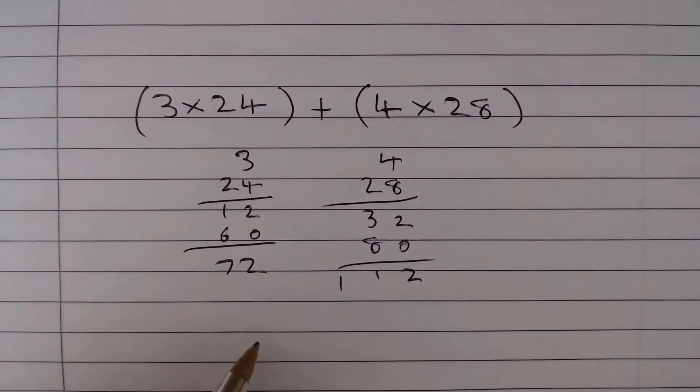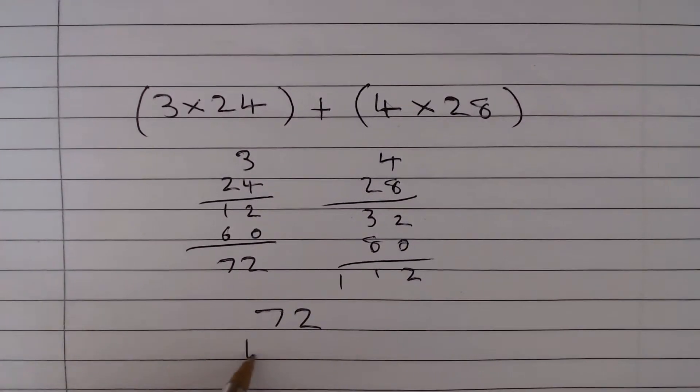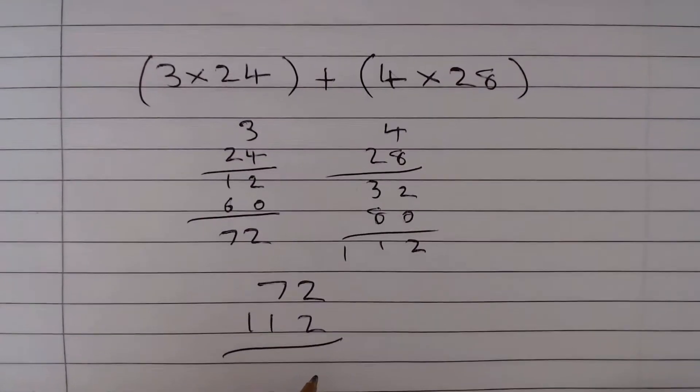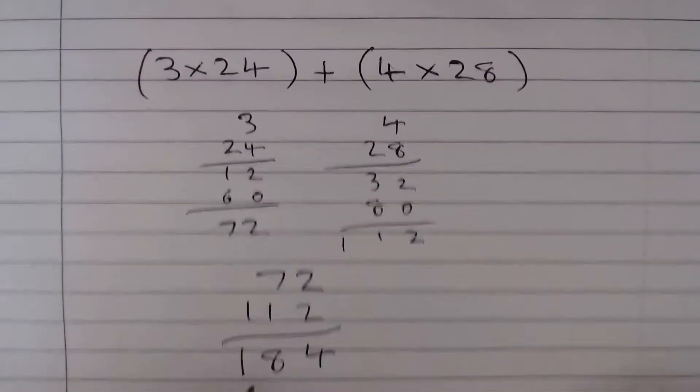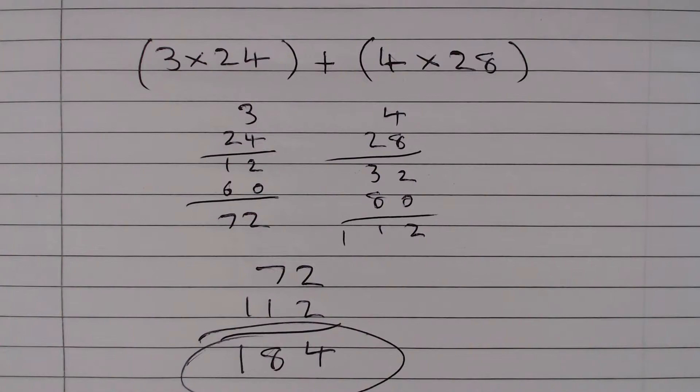And so what we need to do is we need to do 72 plus 112. Well 2 plus 2 is 4, 7 plus 1 is 8 and 1 plus 0 is 1. So we have 184, that is the answer.